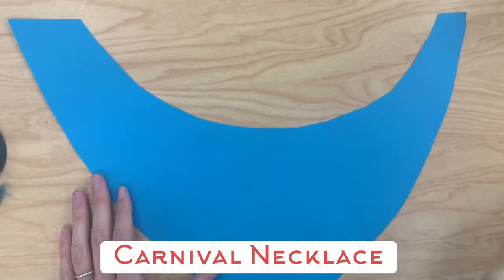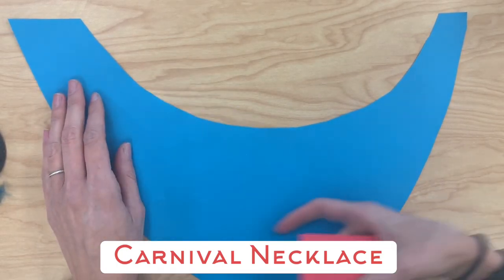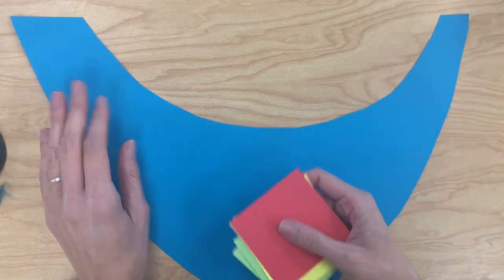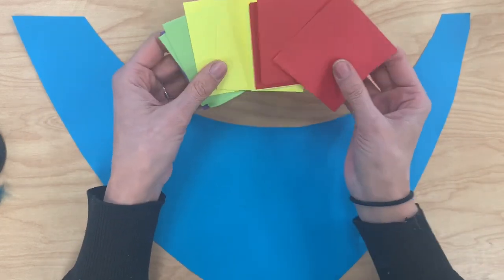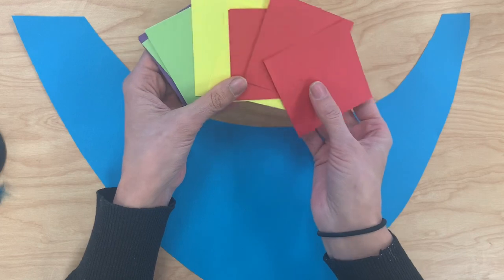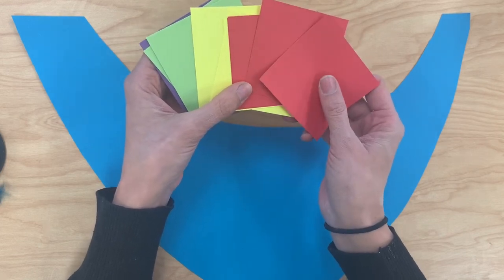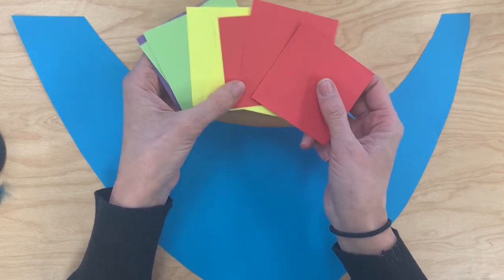To make our carnival necklaces we're going to be decorating this large sheet of paper here with different geometric shapes. So the shapes that we're going to start with are all squares and we can use these to make many other types of shapes.